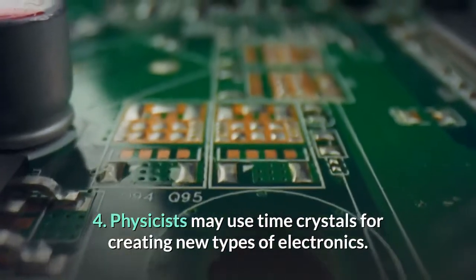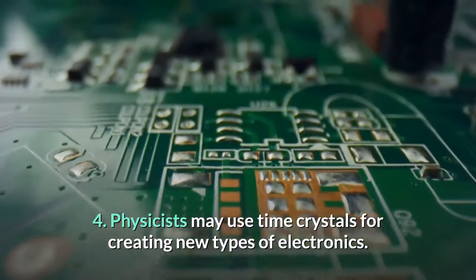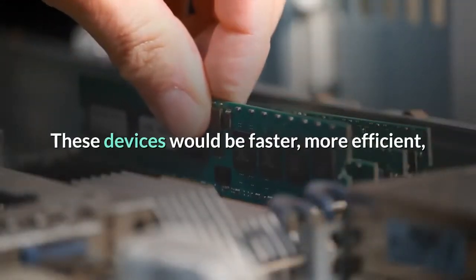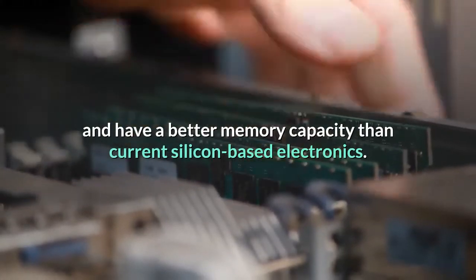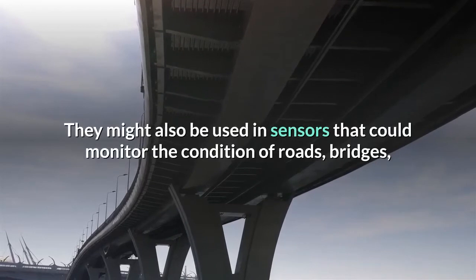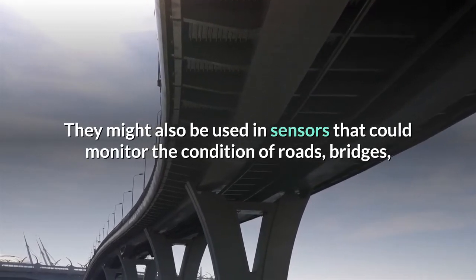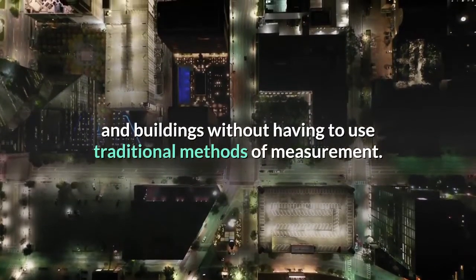Number four, physicists may use time crystals for creating new types of electronics. These devices would be faster, more efficient, and have better memory capacity than current silicon-based electronics. They might also be used in sensors that could monitor the condition of roads, bridges, and buildings without having to use traditional methods of measurement.